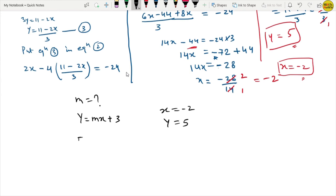Now let's put it. 5 equals to M times minus 2 plus 3. So now what do we do? M times minus 2, so how much will it be? Minus 2M. And this will be plus 3.